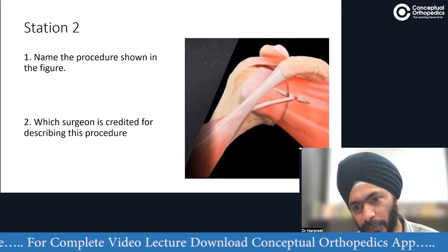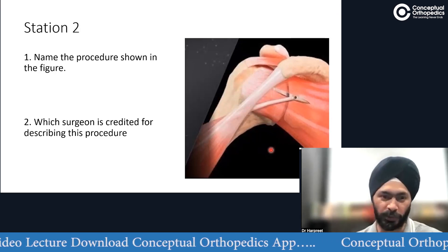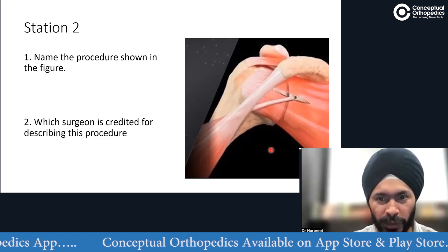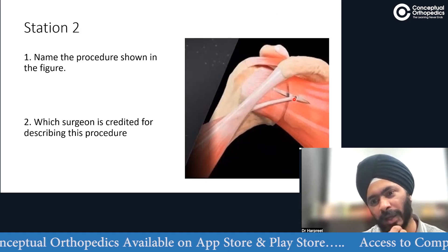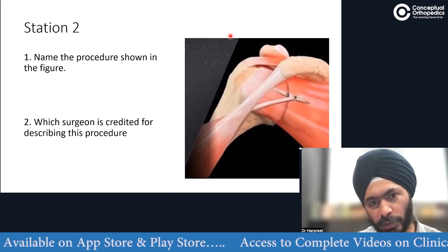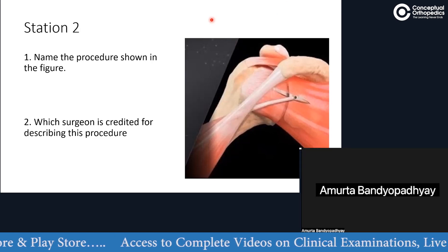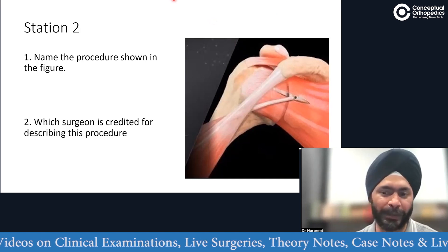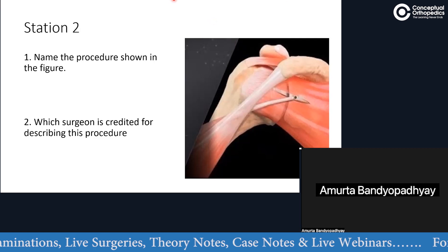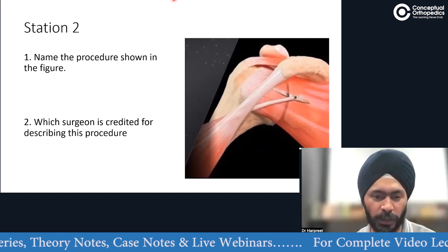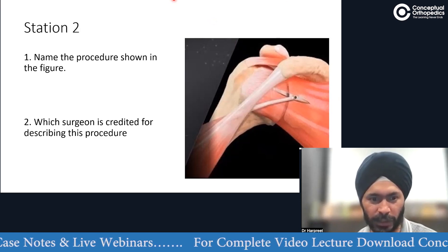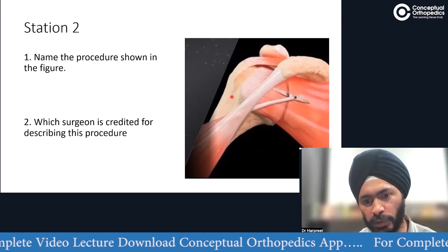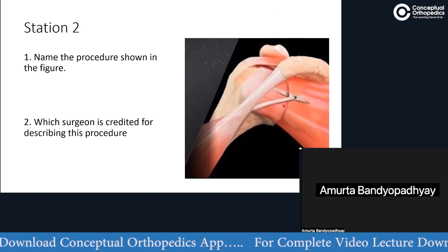Any idea what is being done? What is the procedure? It is a bicipital tenodesis. Where do you normally do bicipital tenodesis? In biceps tenodesis, you normally do it in the bicipital groove, or below the groove — maybe subpectoral, below the pectoralis major. But here it is being tenodesis'd somewhere else.